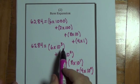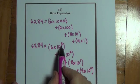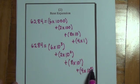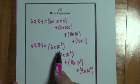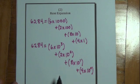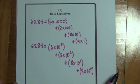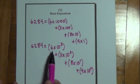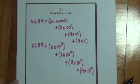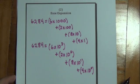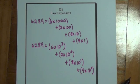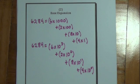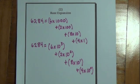Notice the powers or the exponents of 10 are descending: 3, 2, 1, 0. And clearly each number is multiplied by a multiple of 10. So we see that 6,284 can be written as products of some number and powers of 10. That's a base 10 expansion. But base expansion is not limited to base 10. We can expand in other bases as well.